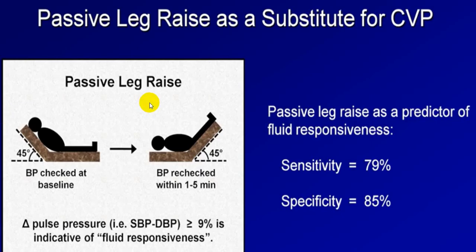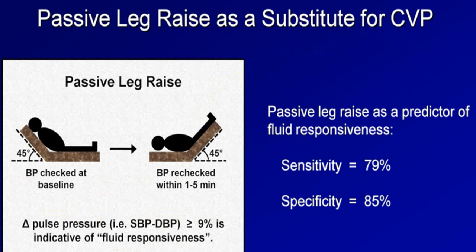One way to substitute for central venous pressure measurement is passive leg raising. When you passively raise the leg keeping the head straight for one to five minutes, if pulse pressure increases by more than 9%, it indicates the person is fluid-deficit or fluid-responsive. By giving IV fluid you increase CVP, increase cardiac output, and benefit the patient. Parameters to look for include JVP, IVC ultrasound, passive leg raise, temperature of extremities, LV function on ultrasound, and other investigations to find out the type of shock.